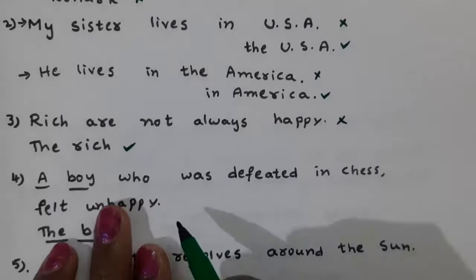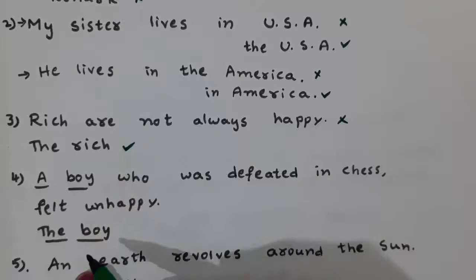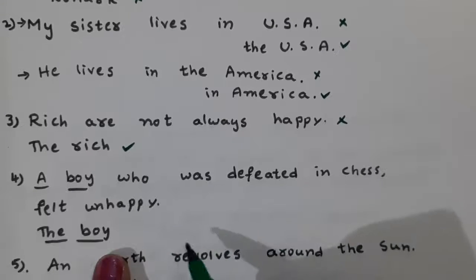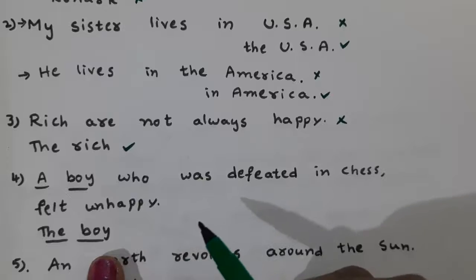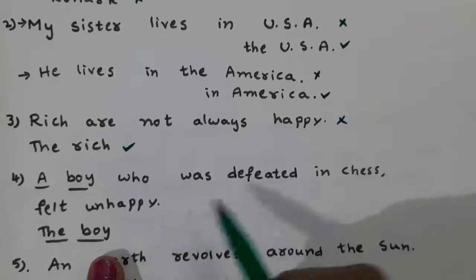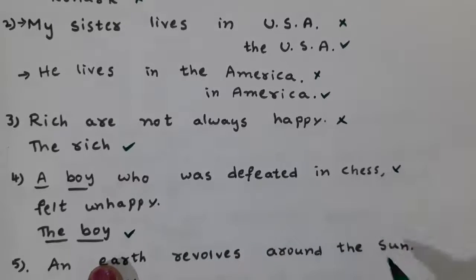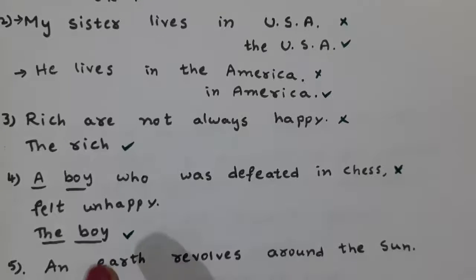Next: 'A boy who was defeated in chess felt unhappy' versus 'The boy who was defeated in chess felt unhappy.' Which is right — 'a boy' or 'the boy'? 'The boy who was defeated in chess felt unhappy' is the correct sentence, because before a specific person, place, or thing, we use the definite article 'the'.